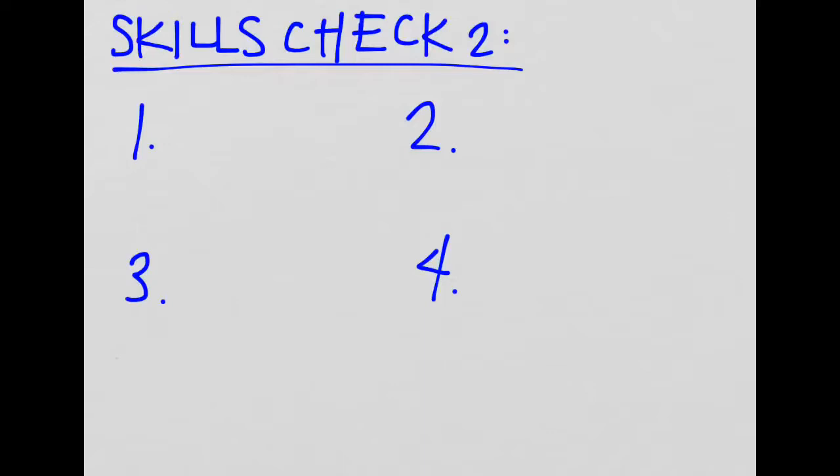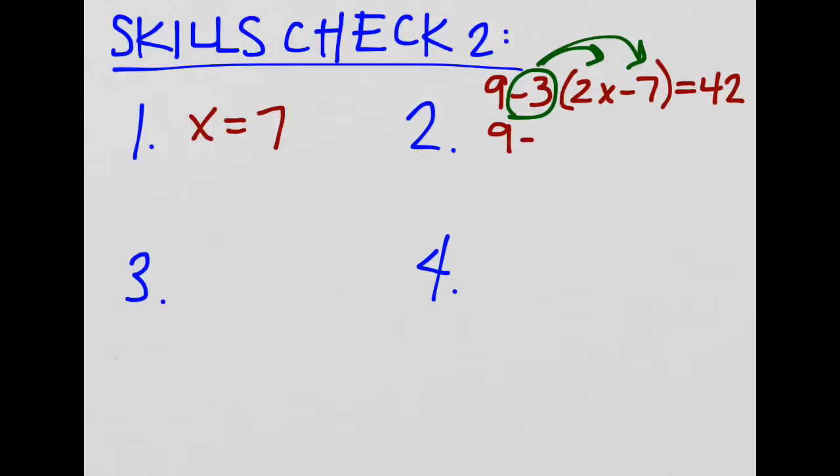So for the first one then, once you've combined your like terms, you should get x to equal 7. Number 2, again, you need to distribute a negative, but I'm going to actually show you an extra step here because I think it's going to be easy to accidentally miss this. When you distributed through, you needed to distribute. I should use another color. You want to distribute that negative 3 all the way through. So what's really happening is that you get 9 minus, you've got the negative 3 times 2x gives you that minus 6x, but a negative times a negative is a positive 21. So go ahead and finish. Oh, that should be a 2. Finish combining all your like terms, and you should get x to equal negative 2.